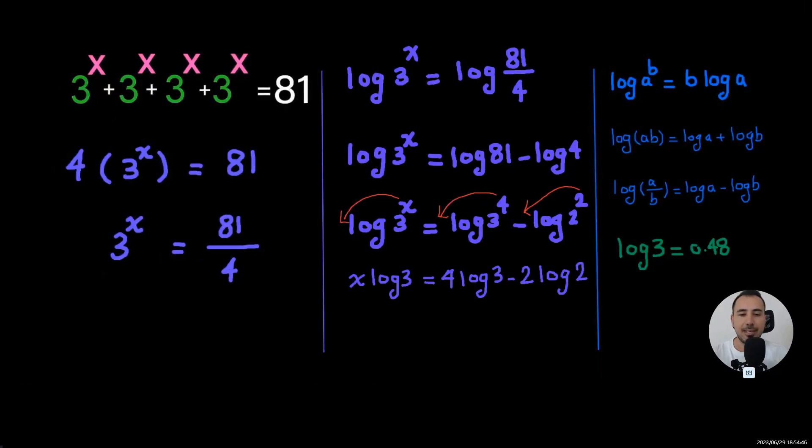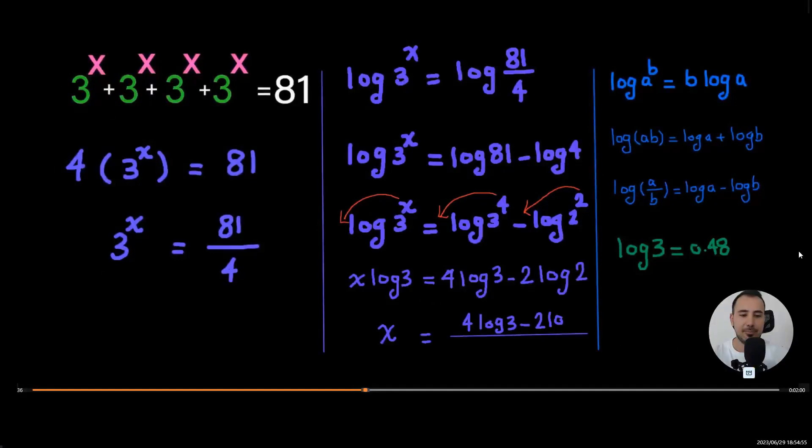Now, the next step is dividing all terms by logarithm 3. So now you can see here 4 log 3 divided by log 3 is going to be 4 minus 2 log 2 over log 3.